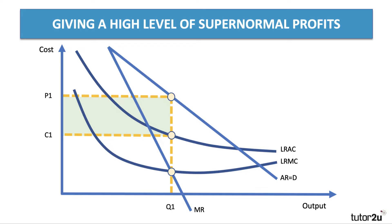We can shade in the area of supernormal profits. If unregulated and privately owned, those profits are likely to be pretty high. Crucially, the natural monopolist is likely to be allocatively and productively inefficient — the price P1 is well above marginal cost, and the firm is not at the minimum of its long-run average cost curve.